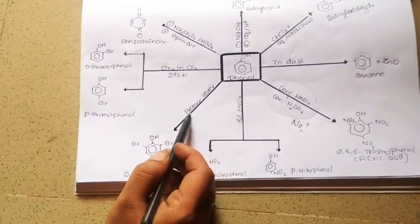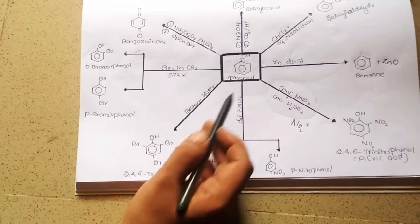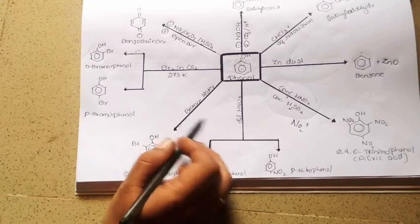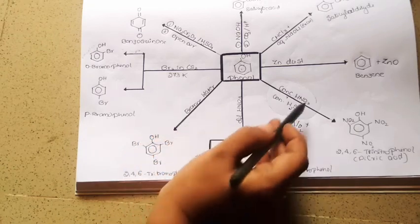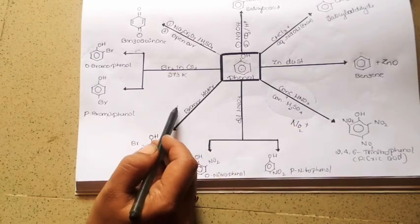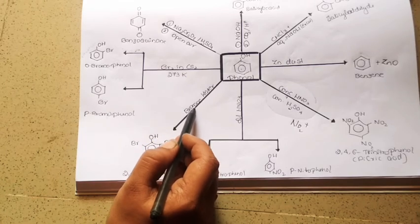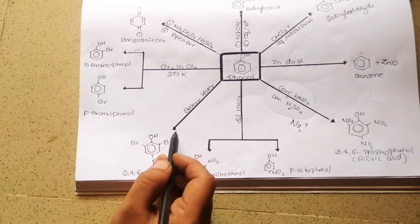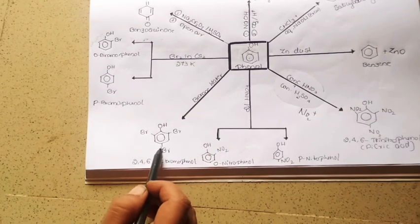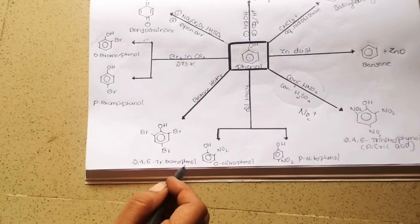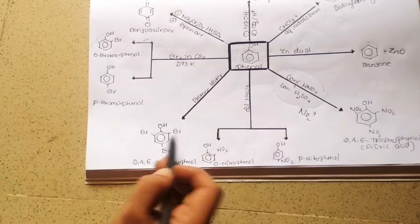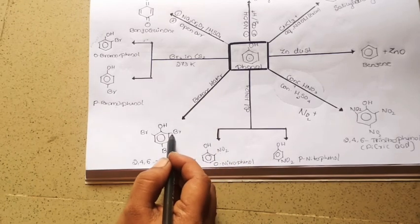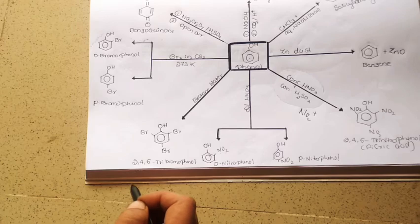When phenol is treated with bromine water, it also undergoes electrophilic substitution reaction. Bromine water is a strong electrophilic substituting reagent, and this results in the formation of 2,4,6-tribromophenol.